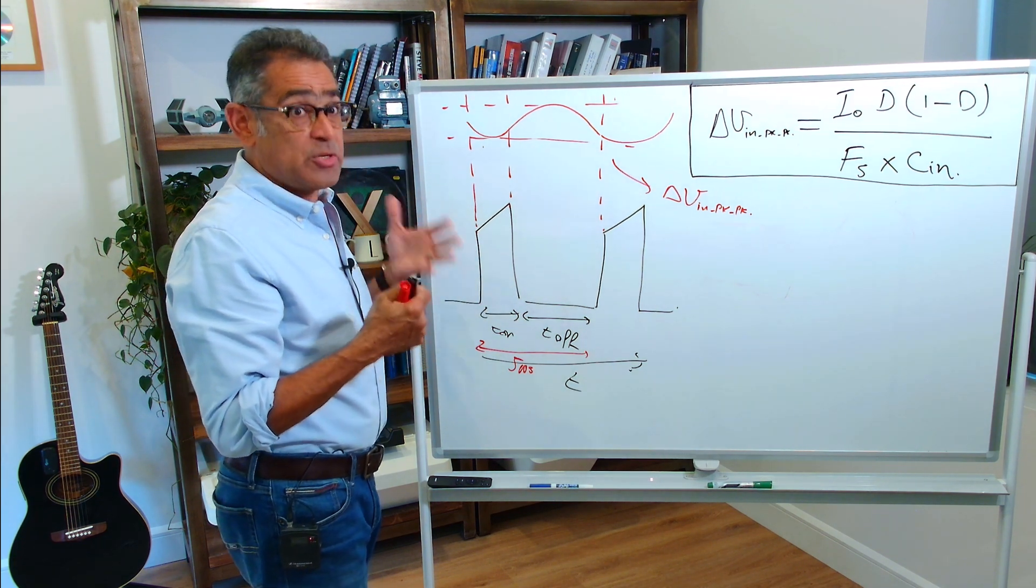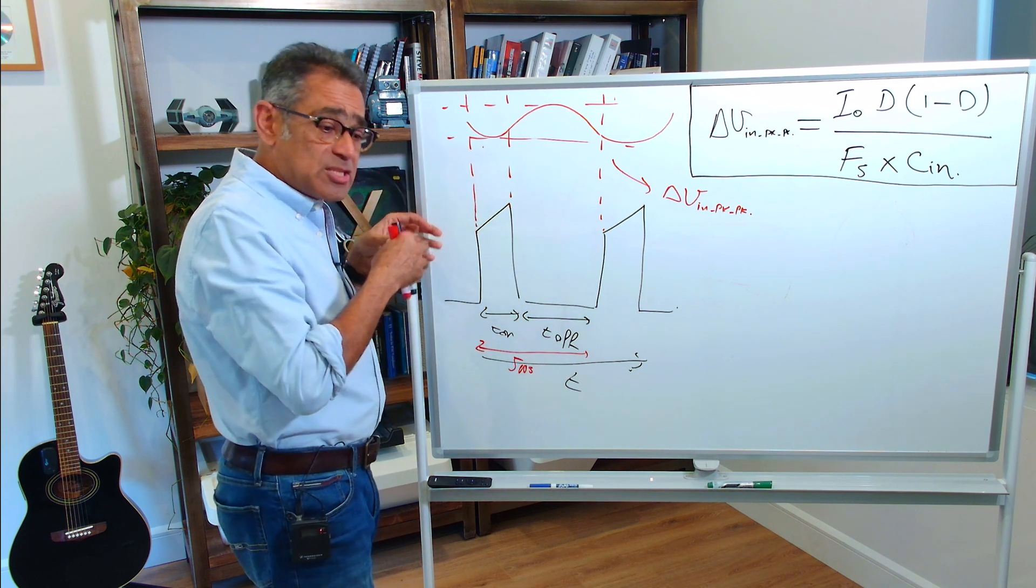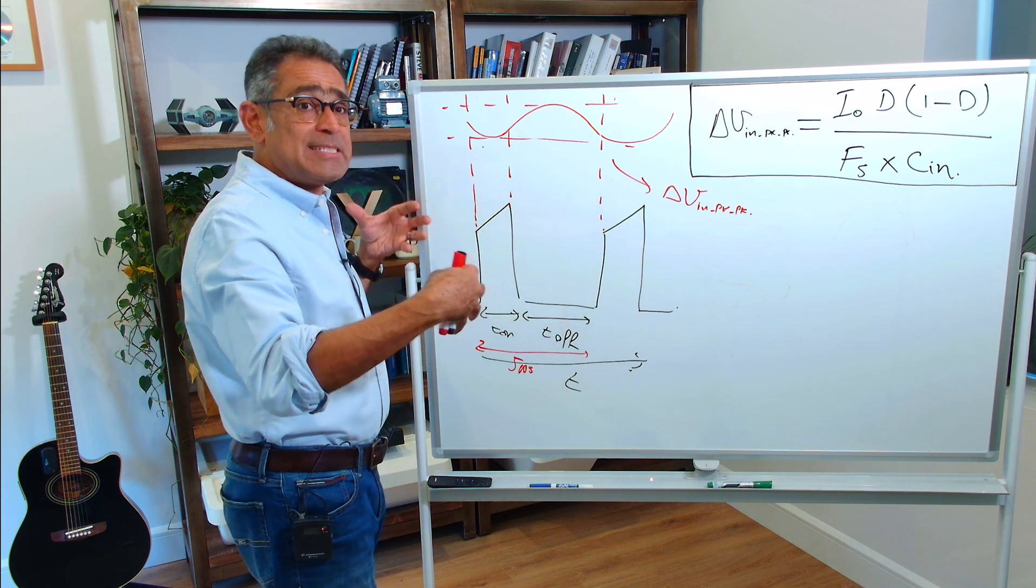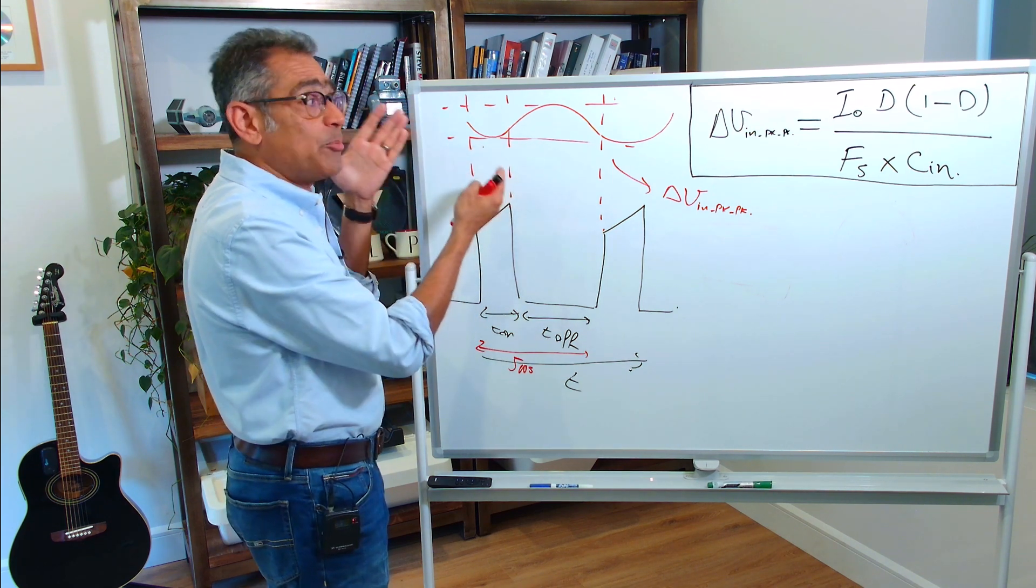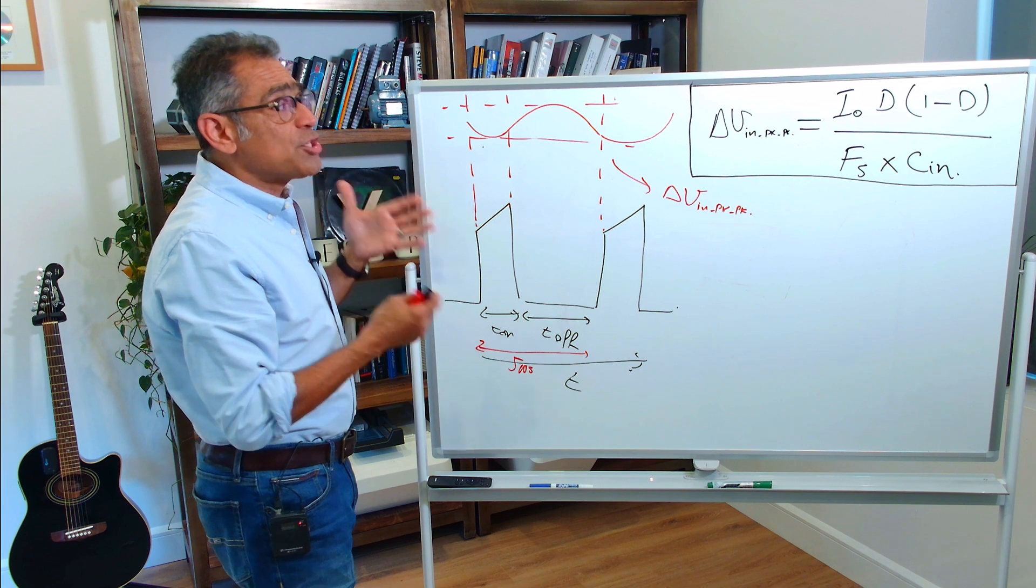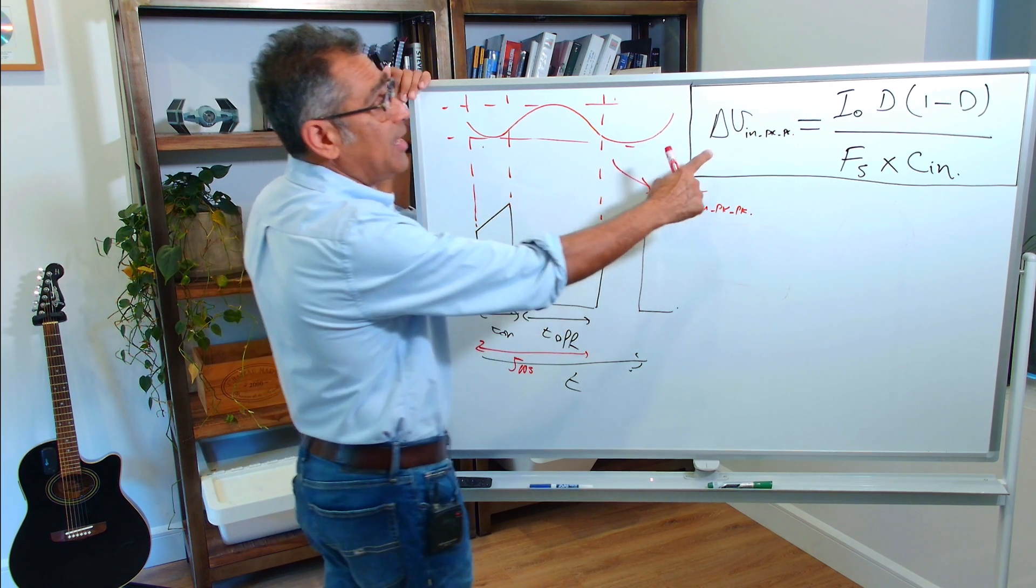Therefore, the worst case would be to assume that we have high impedance, we've got long cables, or our power supply is far away from the DC bus on the PCB. So, under this condition, where we have got high impedance, the equation for a buck converter would boil down to being something like this.